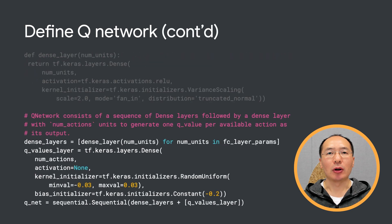The network is pretty simple and consists of a few dense layers. The last dense layer needs to output a probability distribution over all possible actions, which then allows us to pick the best action. We stack all layers together, and we have our Q-network.